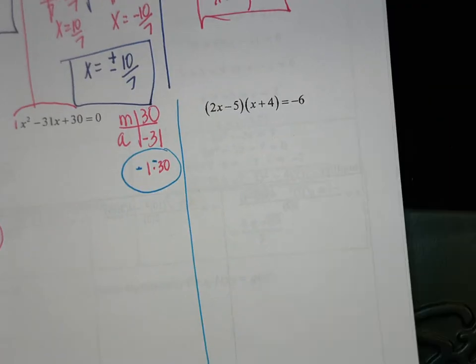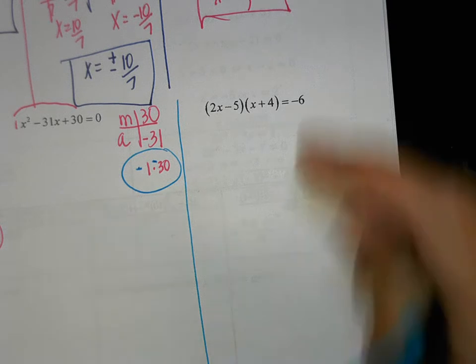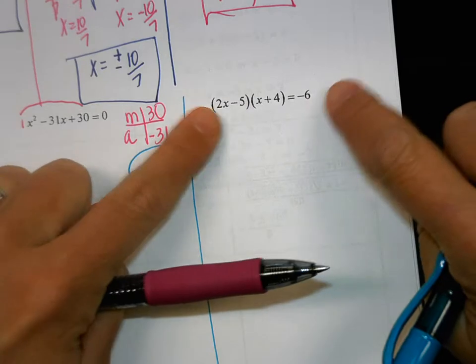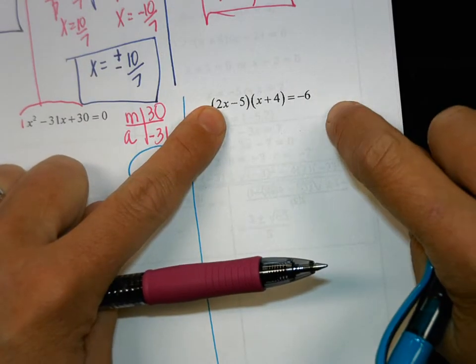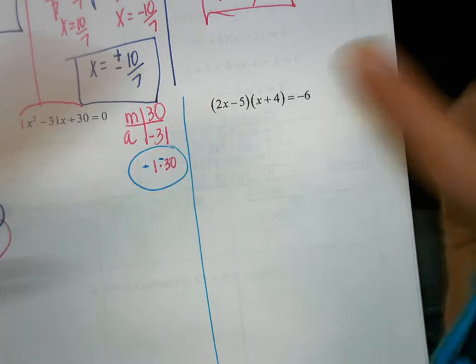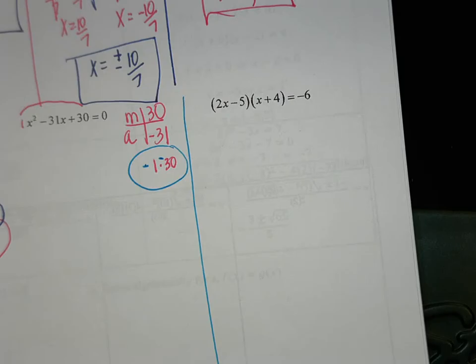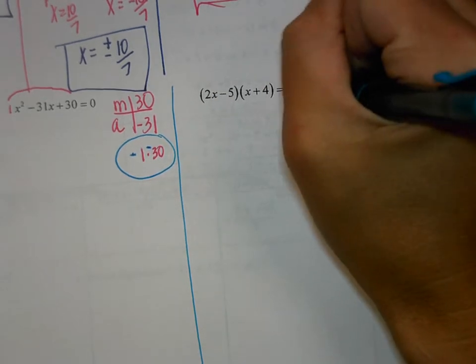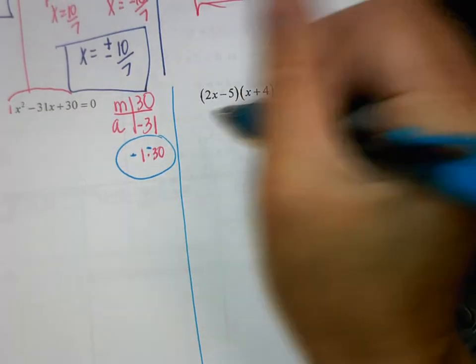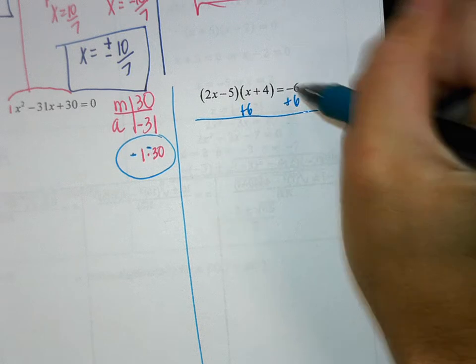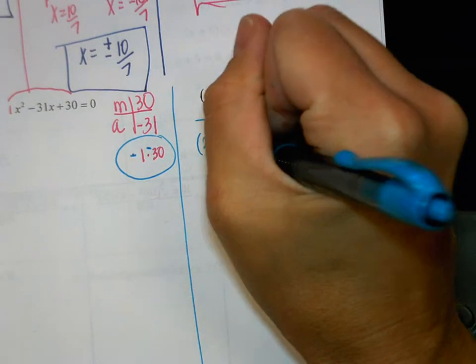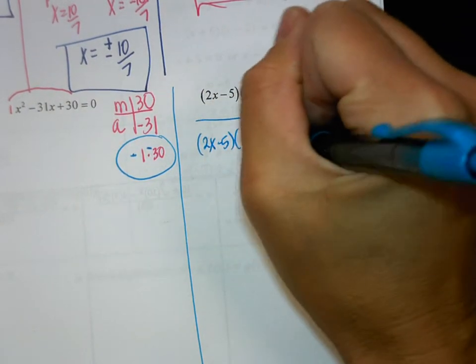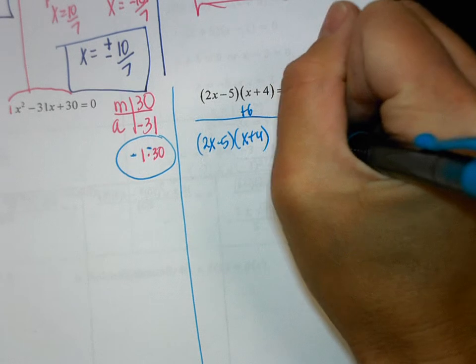We're going to go to this next one. Is this set equal to 0? No — and you can't take each of these factors and set them equal to negative 6. It has to be equal to 0. So what am I going to do? Add 6 to both sides. So now I have 2x minus 5 times x plus 4 plus 6 equals 0.